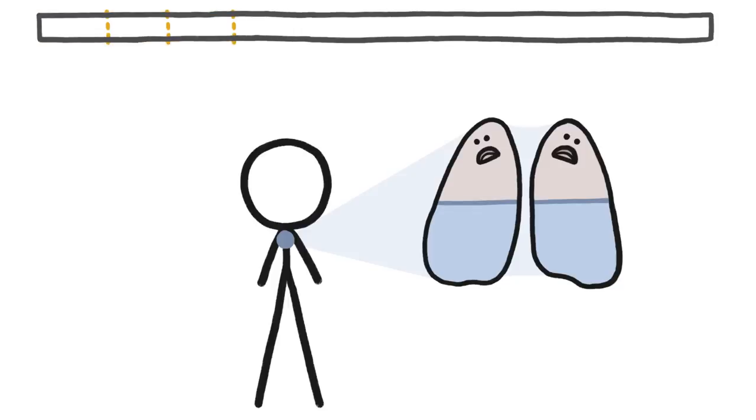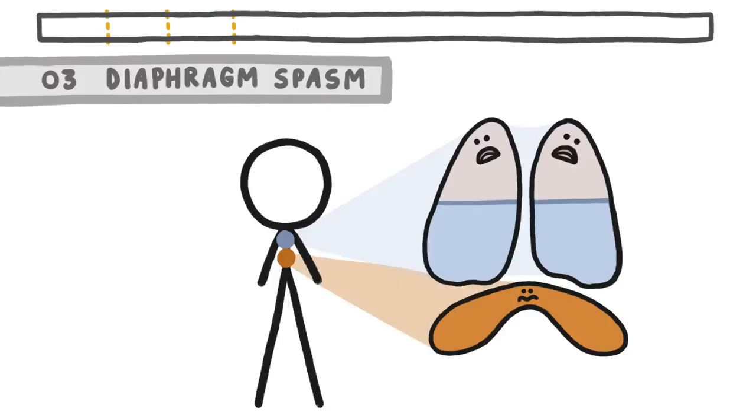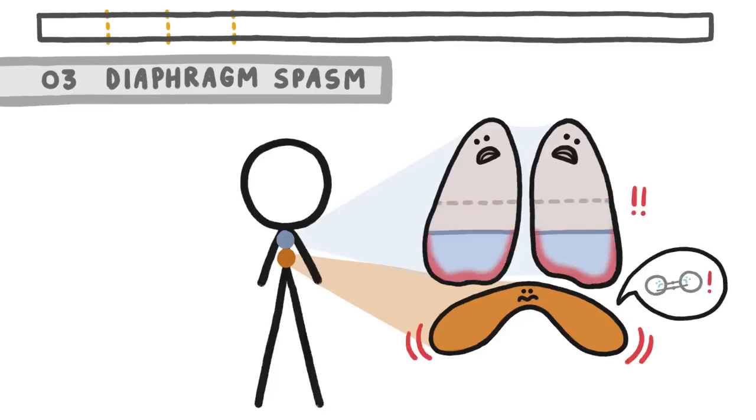The third survival system they hack is the diaphragm spasm. When your oxygen level falls below a certain point, it causes your diaphragm to start spasming, which painfully jerks on your lungs, basically yelling at them to get more oxygen as soon as possible.